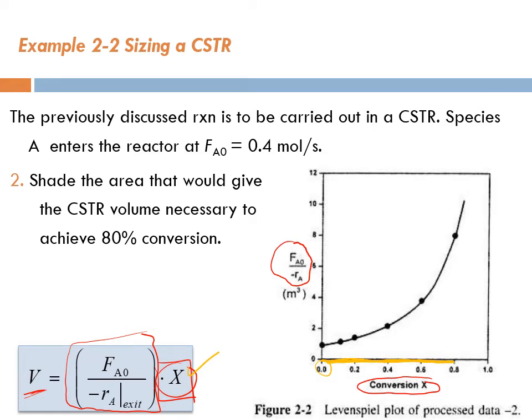What about the value of FA0 over minus RA? We said this is evaluated at the exit, so it's evaluated at 0.8, when X is 0.8, because X of 0.8 represents the concentration at the exit, and the concentration at the exit equals the concentration inside the reactor. So what's the value of FA0 over minus RA when X is 0.8? We can read it from the figure. At X of 0.8, the value is this. That's the value of FA0 over minus RA.